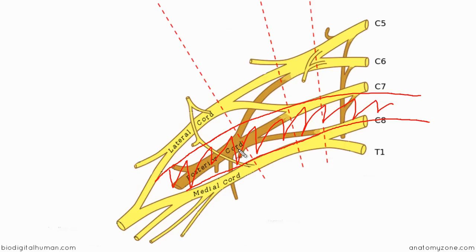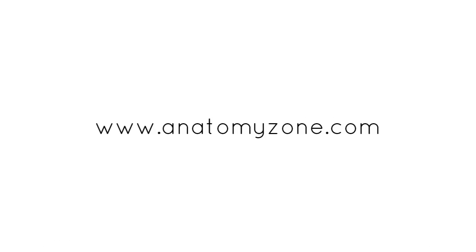That should give you a basic understanding of the structure of the brachial plexus and its location in relation to other structures. The roots and trunks pass through the posterior triangle of the neck, the divisions lie behind the clavicle, and the cords lie in the axilla with the posterior cord behind the axillary artery and the lateral and medial cords on either side. Next, we'll take a look at the various branches of the brachial plexus — the terminal nerves and the branches coming off the roots, trunks, and cords.